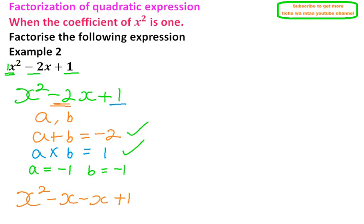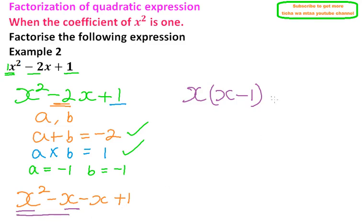Now we factor out what is common in the first two terms: x squared and x. Since x is common, we take x outside the bracket, leaving x minus 1 inside. For the last two terms, we factor out minus 1, giving minus 1 times the bracket x minus 1. The reason we factor out minus 1 is so that what is inside both brackets is the same.